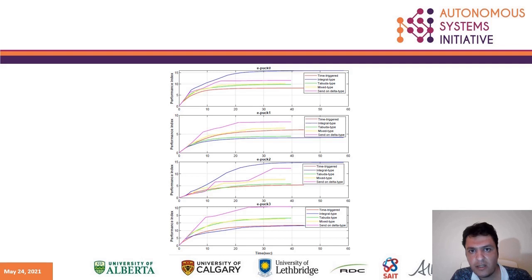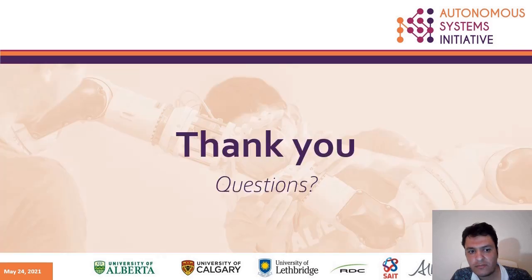Based on our analysis, whenever the average transmission rate is low, we lose control performance. However, it is important to tune the parameters of the event-trigger mechanism such that we provide the desired control performance and reduce the communication rate. Thank you.